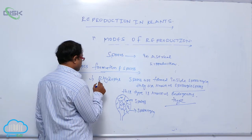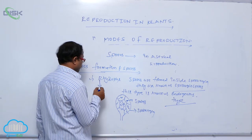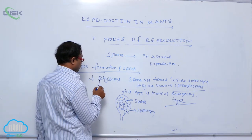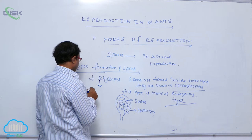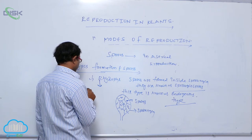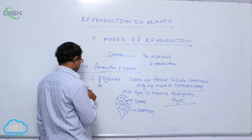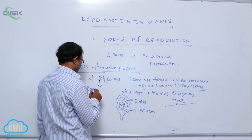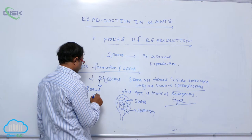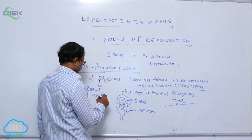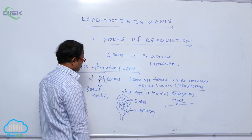Rhizopus is generally grown on bread, and that is why it is known as bread mold.